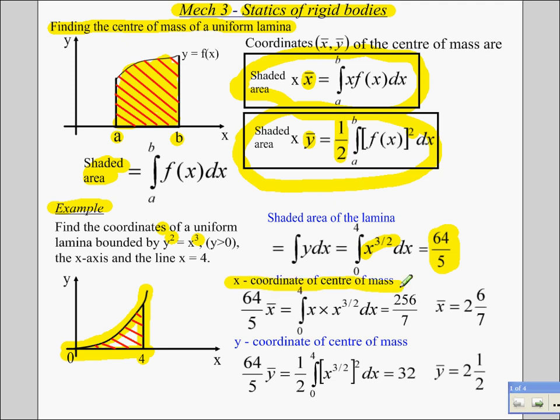Now, to get the x-coordinate of center of mass, we use this formula here. So we know the shaded area, 64 over 5, times x bar is the integral of x times f of x dx. So multiply those together, integrate, and go between 4 and 0, and you get this number. 64 over 5 x bar is 256 over 7. So multiply 256 over 7 by 5 over 64, and you get 2 and 6 sevenths. And it should look about right. Always check that on these types of questions. You'd expect it to be towards the end with the most area, and that doesn't look too bad.